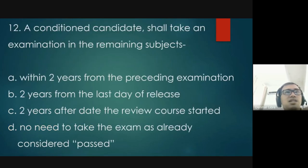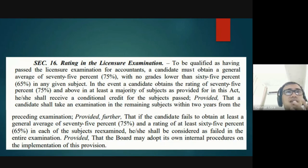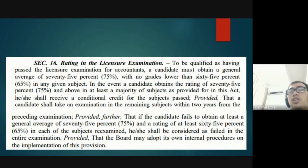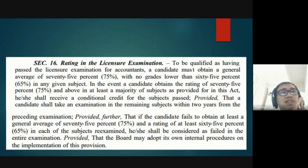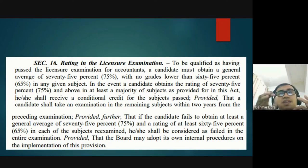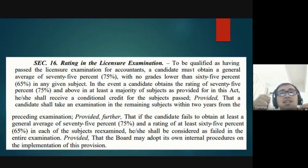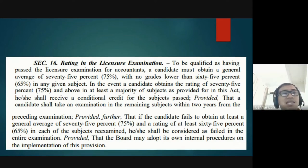Question twelve: a conditioned candidate shall take an examination in the remaining subjects. Let me explain what conditional means. To pass the licensure examination, a candidate must obtain a general average of 75% with no grade lower than 65% in any subject. In the event a candidate obtains 75% and above in at least a majority of subjects, they receive a conditional credit for the subjects passed, provided they take the remaining subjects within two years from the preceding examination. There are three possible statuses: pass, failed, and conditional.